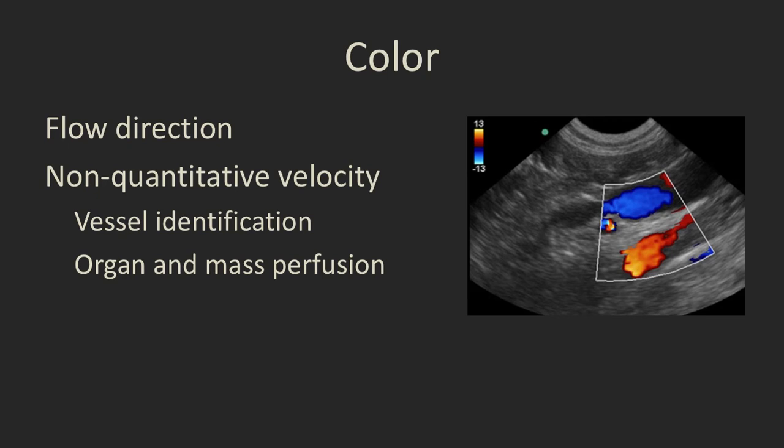It shows the presence of flow and it shows the direction of that flow relative to the transducer. The standard is usually set up such that red—and you can see by just confirming it on the little color graph—red is flow towards the transducer and blue is flow away from the transducer.